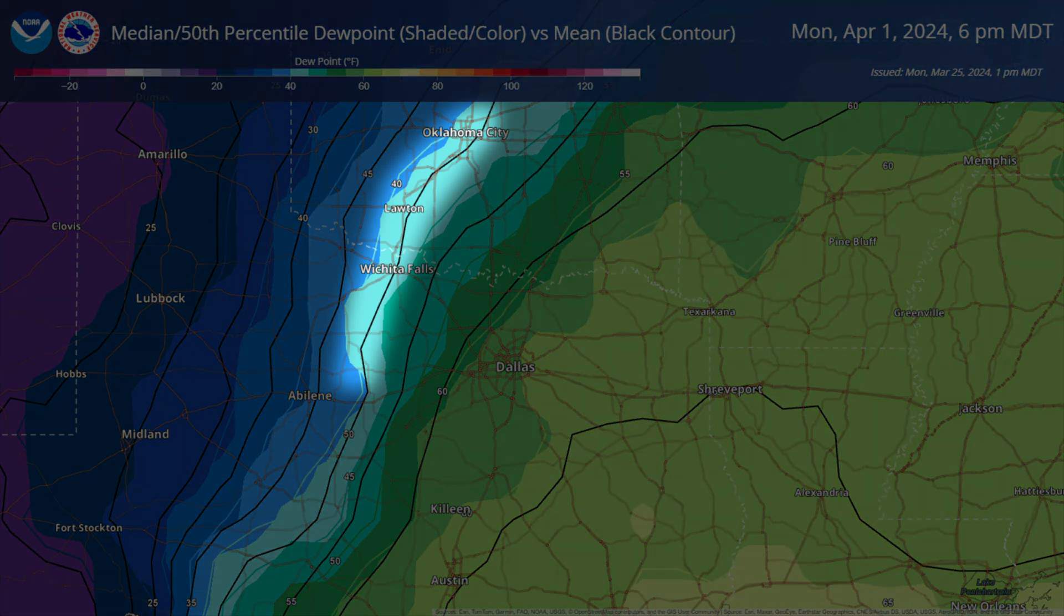In this region, the shading and color contours indicate temperatures roughly around 40 degrees Fahrenheit for dew point, with the black contour for the mean closer to 50 degrees Fahrenheit. There's a difference of 8 to 10 degrees between the median and the mean in the area we're looking at, and in other areas of the map as well.